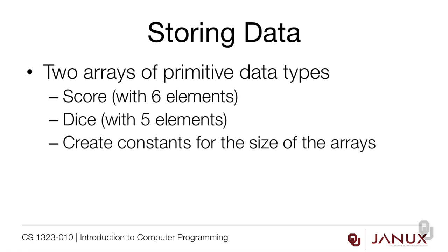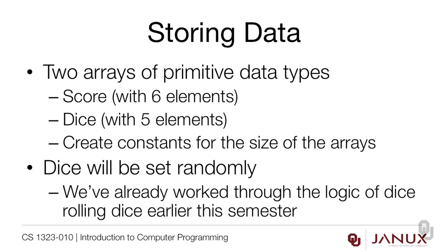We've got to consider our options for storing data. There are two arrays of primitive data types that are going to show up in this problem: one is the score for the six elements, and the other is the five dice. We're going to want to create constants for the size of the array. The dice will have to be set randomly — we've worked through the logic of this earlier in the semester, so let's go to our program and add those elements in.